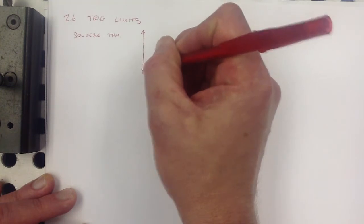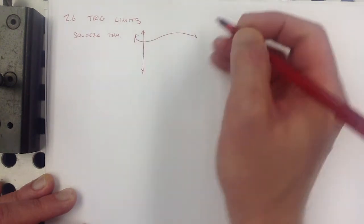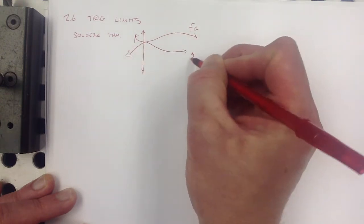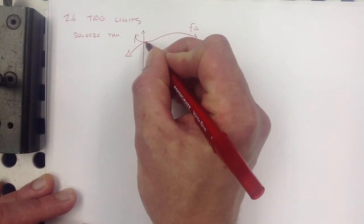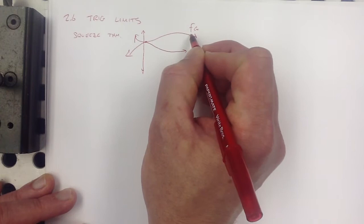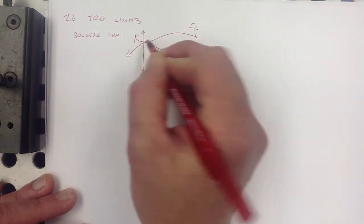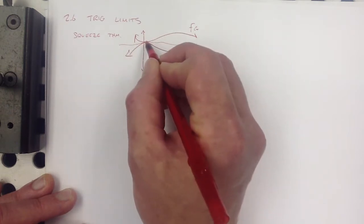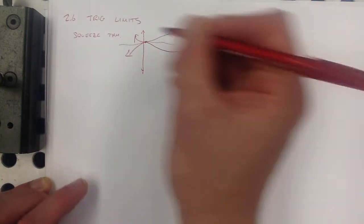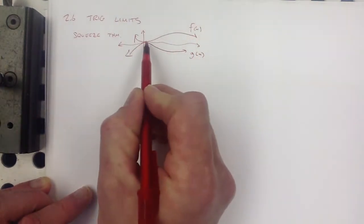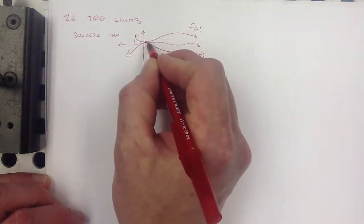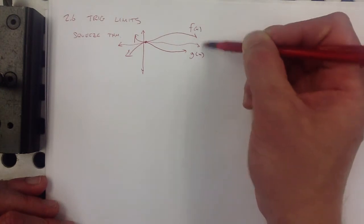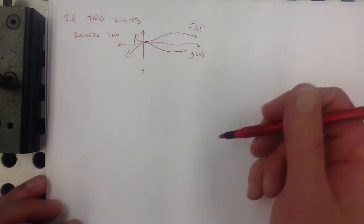Without going into all the nitty-gritty detail: if you have two functions, f(x) and g(x), and those two functions at one particular point have the same limit, and there's a third function that's always trapped in between those two, then it must also have the same limit there. If this thing is forever trapped between f(x) and g(x), then how could it not go through that same point? We're talking about limits, so it might be a situation where it's not defined at that point.